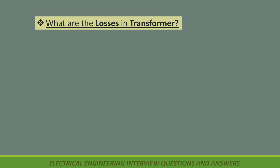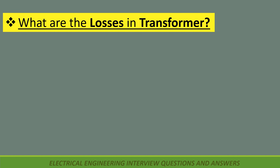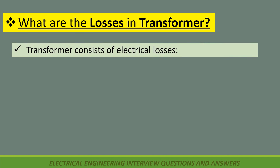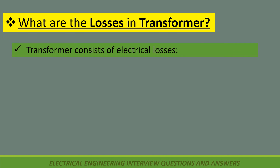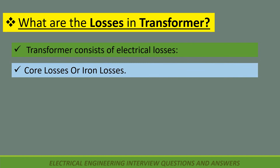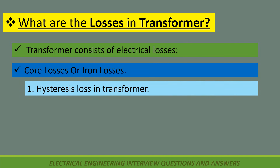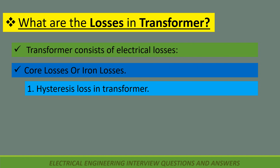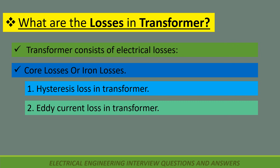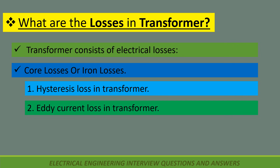What are the losses in transformer? Transformers have electrical losses and core losses or iron losses. In core or iron losses: first, hysteresis loss in transformer; second, eddy current loss in transformer.